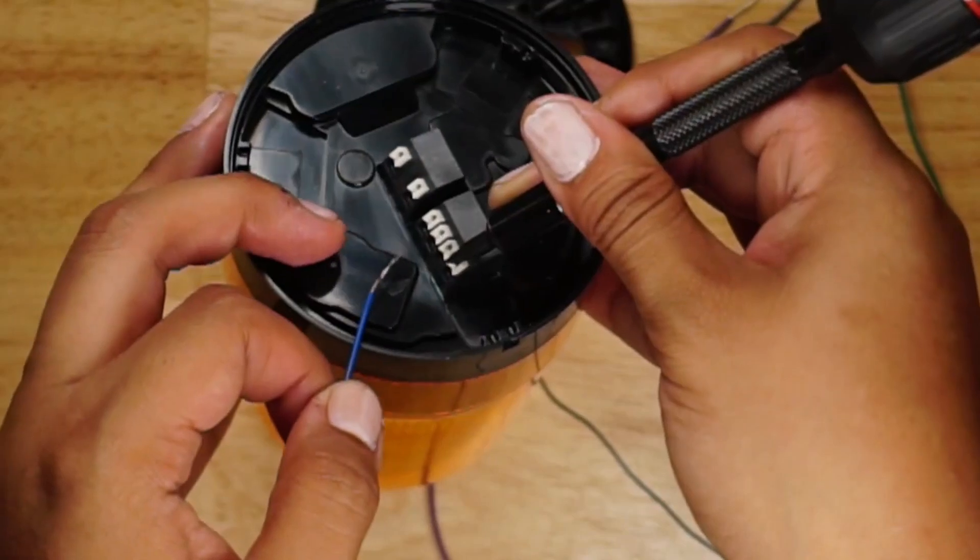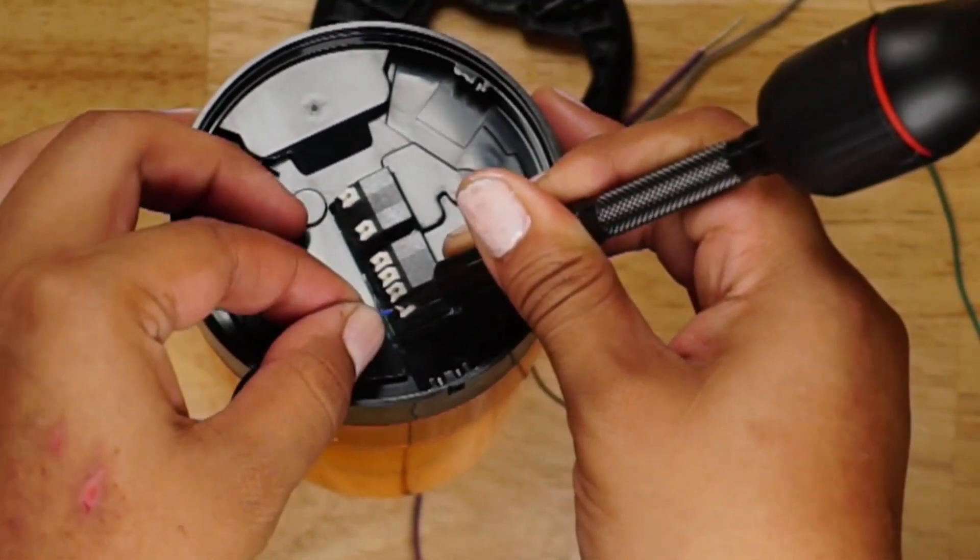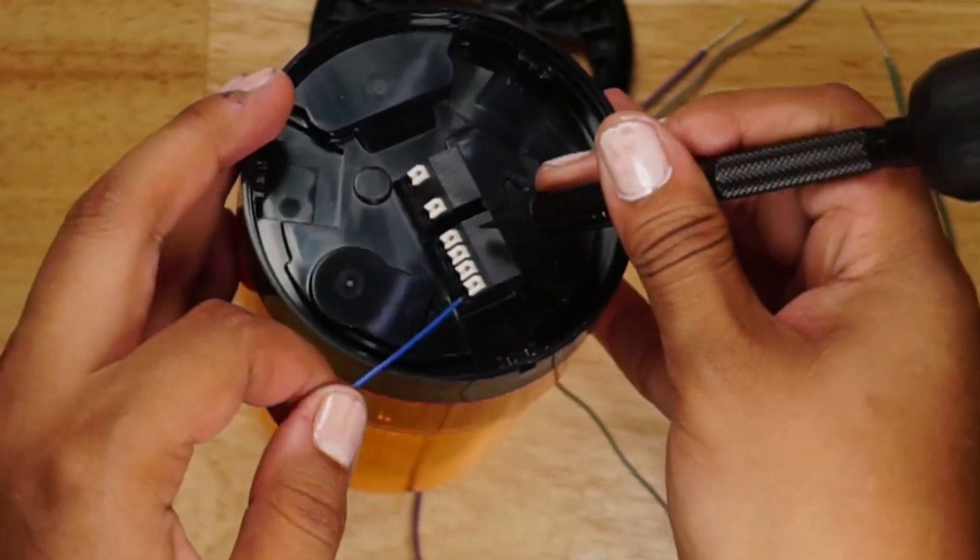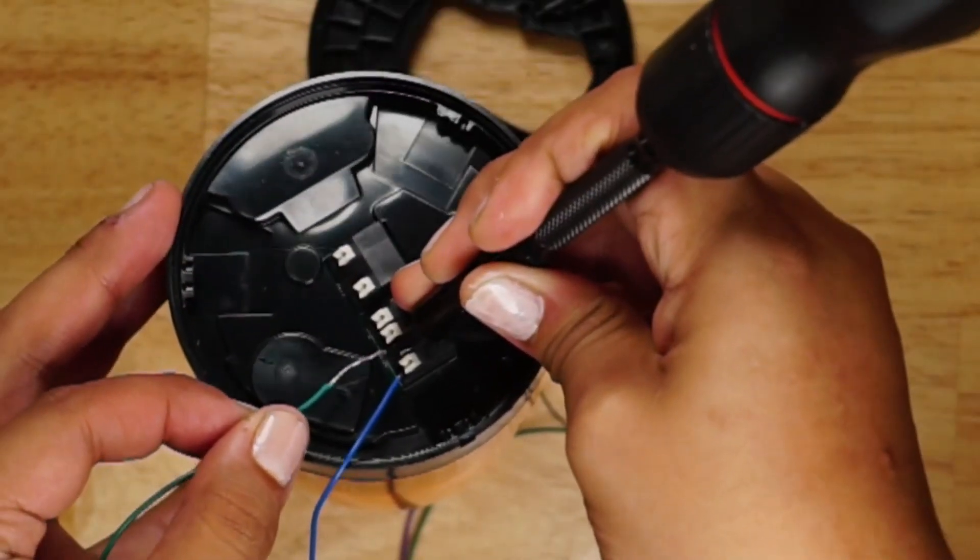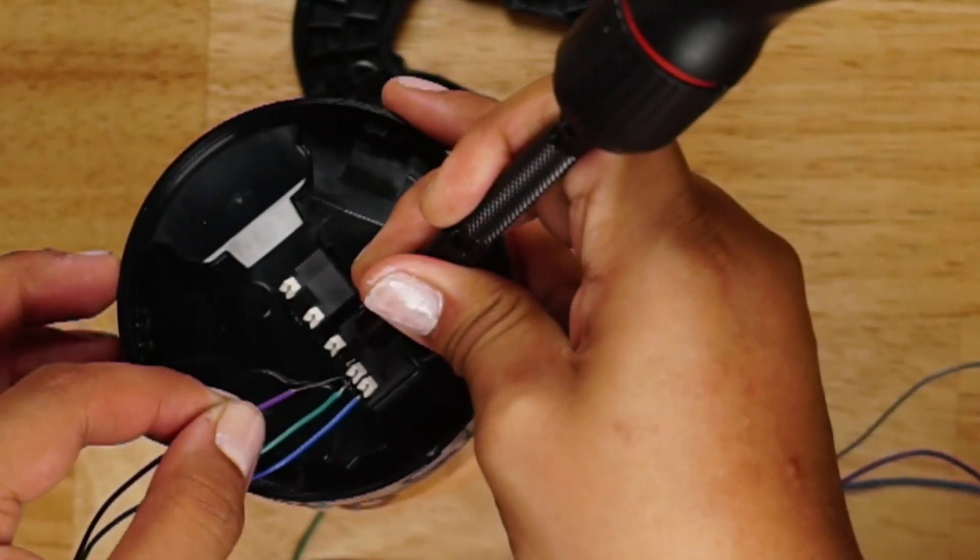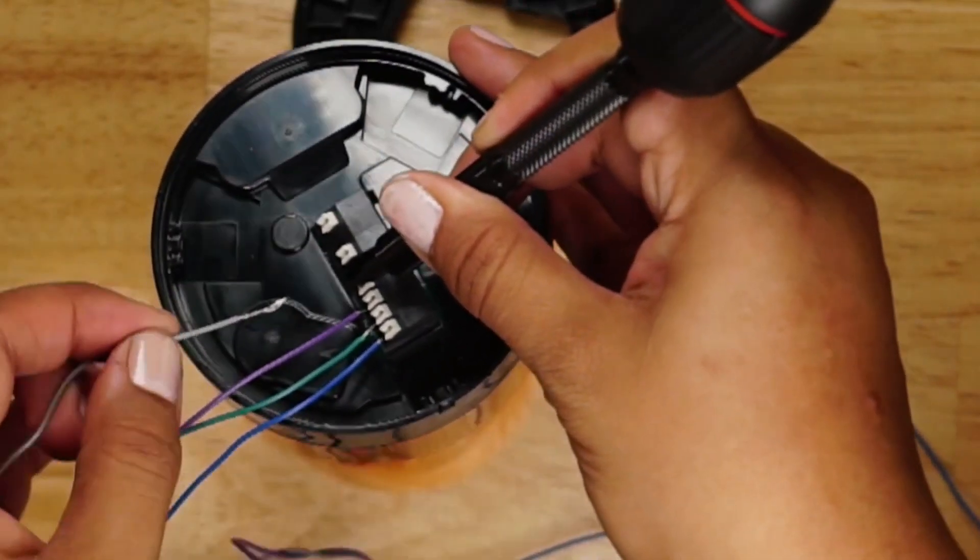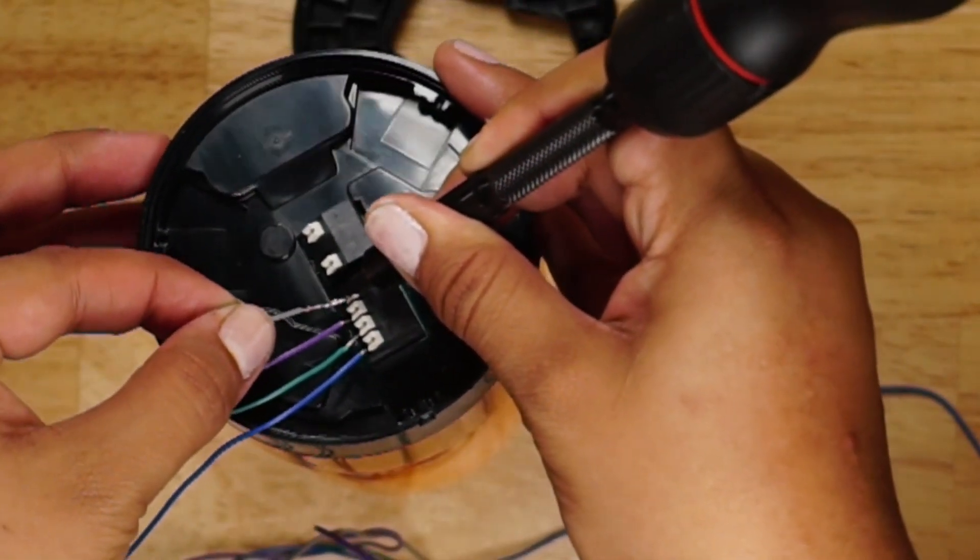Here I am using my flat head screwdriver to push the terminal spring open and inserting a blue wire into channel 2. My green wire goes to channel 1, purple wire for buzzer, and gray wire into my common terminal.